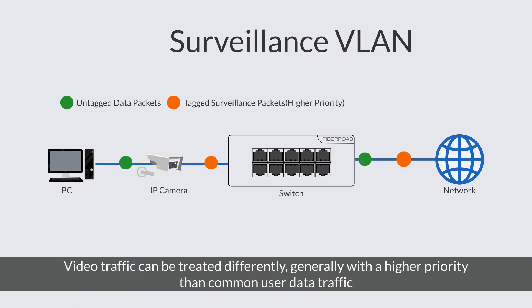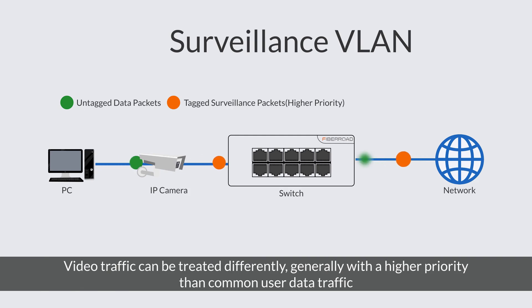The surveillance VLAN enables a single-access port to accept untagged data traffic as well as tagged video traffic, and associate each type of traffic with distinct and separate VLANs. By doing this, video traffic can be treated differently, generally with a higher priority than common user data traffic.